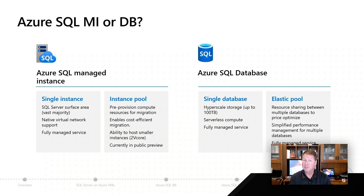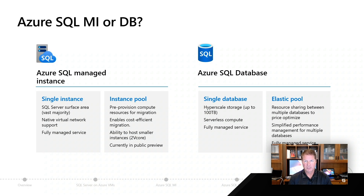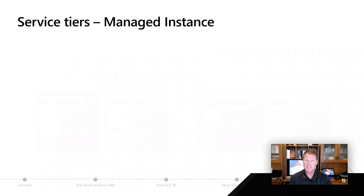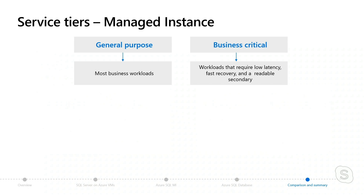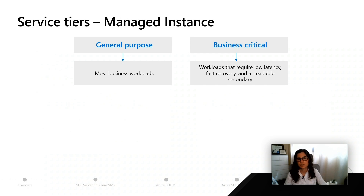Currently in public preview, you start with an instance, you pick an instance pool, and then you're going to dive into what are called service tier choices for deploying a managed instance. When we look at the service tiers for managed instance, it's a pretty easy decision — there are two options available: general purpose and business critical.